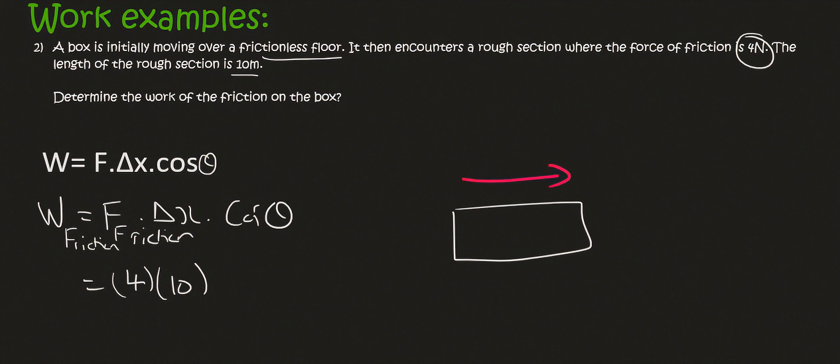Then the friction force will obviously be to the left. And so the angle between those two is going to be 180. So you could say cos 180, which is equal to minus 1. And so the answer is minus 40 joules.